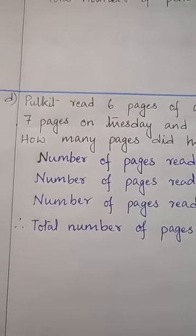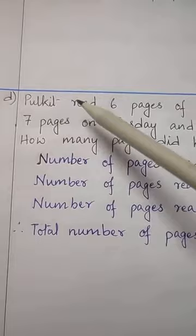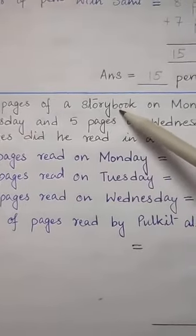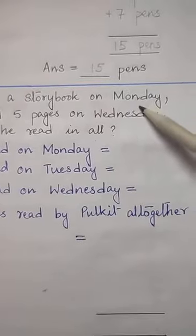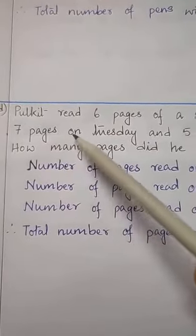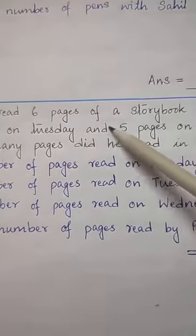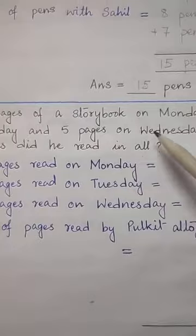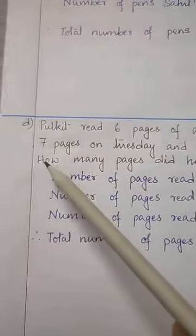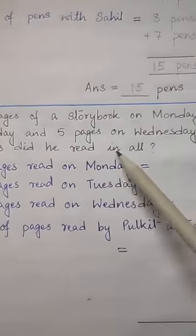So number D, let's read the question. Pulkit read 6 pages of a storybook on Monday, 7 pages on Tuesday, and 5 pages on Wednesday. How many pages did he read in all?